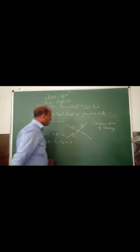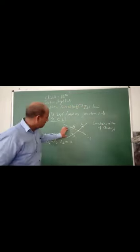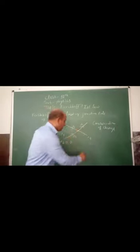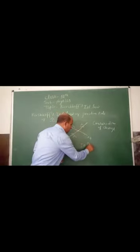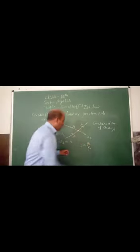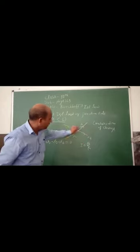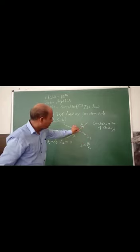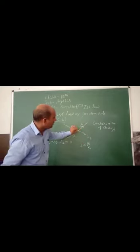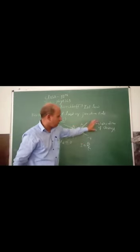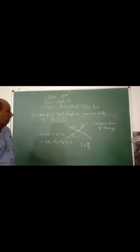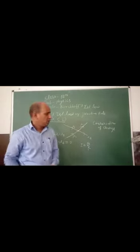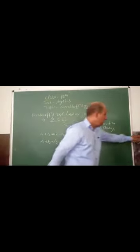The charge coming in — what is charge? Current is flowing charge per second. The flowing charge per second entering is equal to the charge leaving. There is no loss of charge. Now we will do a question based on this.